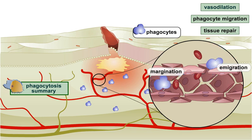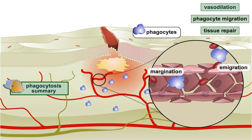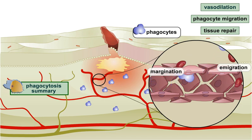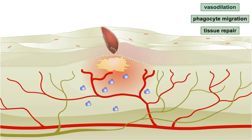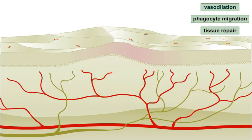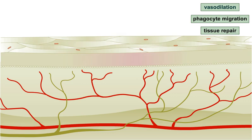After engulfing large numbers of microorganisms and damaged tissue, the phagocytes die, forming pus. The final stage of inflammation is tissue repair. The increased delivery of nutrients and oxygen from vasodilation aids in this process. Other components of the blood lead to the formation of blood clots, which seal off the site of injury.